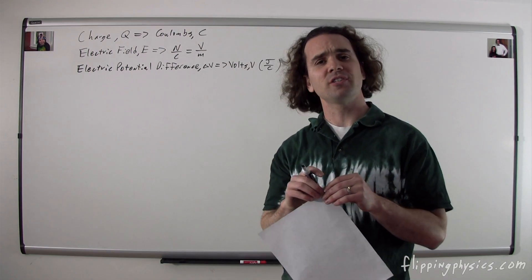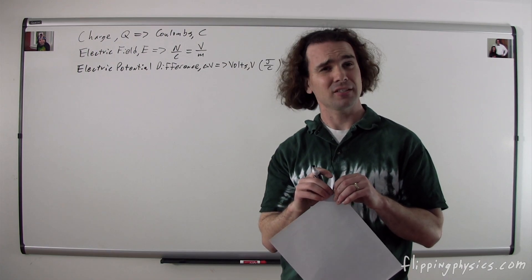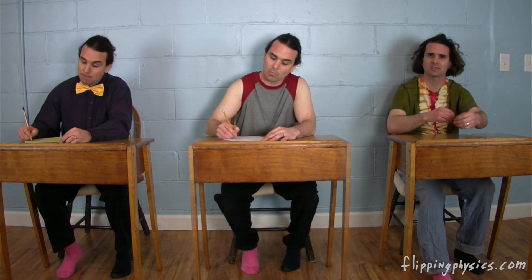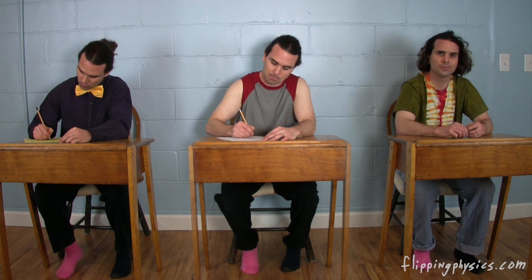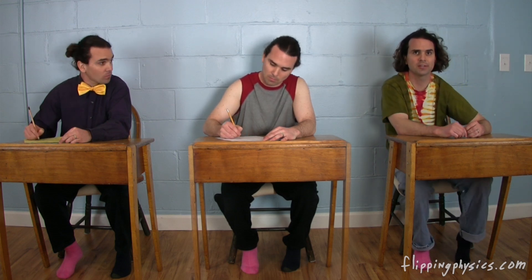Bo, what are the symbol and dimensions for electric flux? The symbol is that uppercase phi, which looks like an uppercase I with a circle in it, and a subscript of an uppercase E to identify it as electric flux. The dimensions for electric flux are newtons times meters squared over coulombs, or volts times meters.